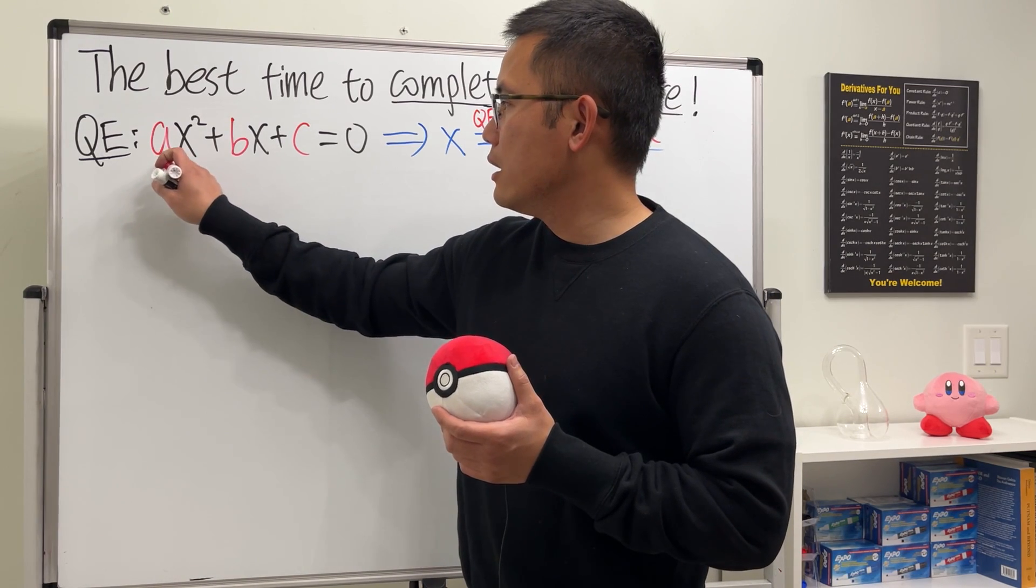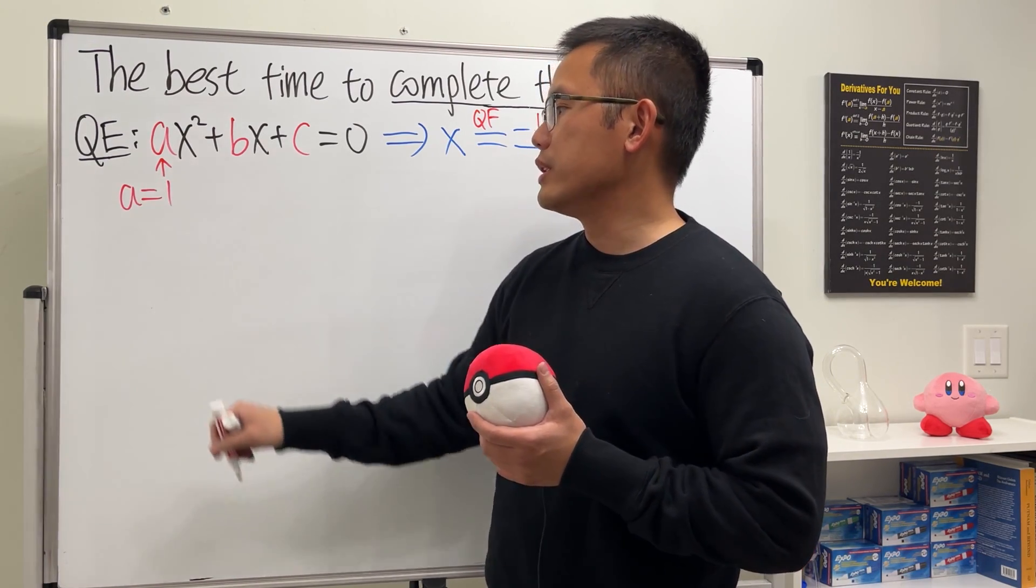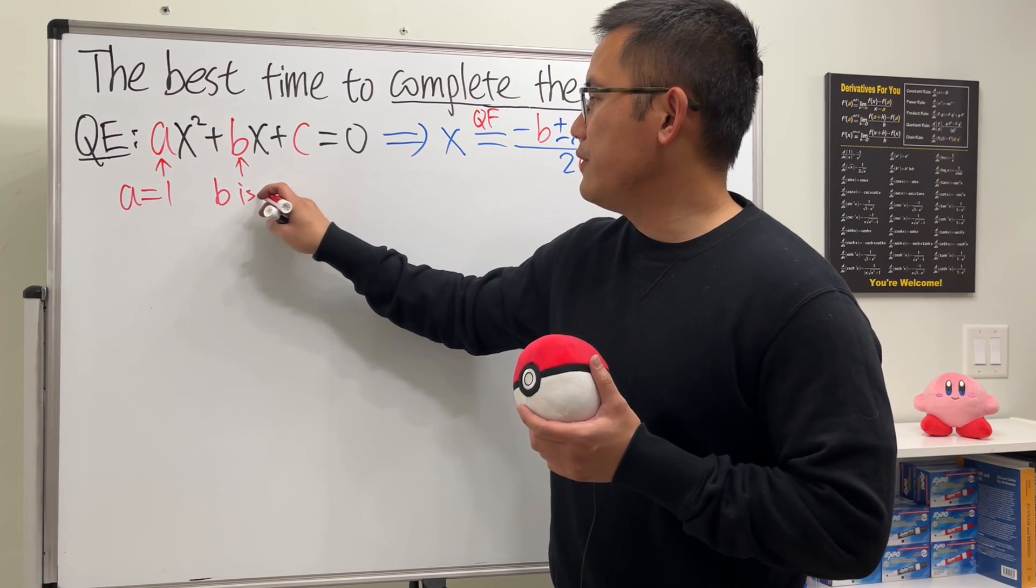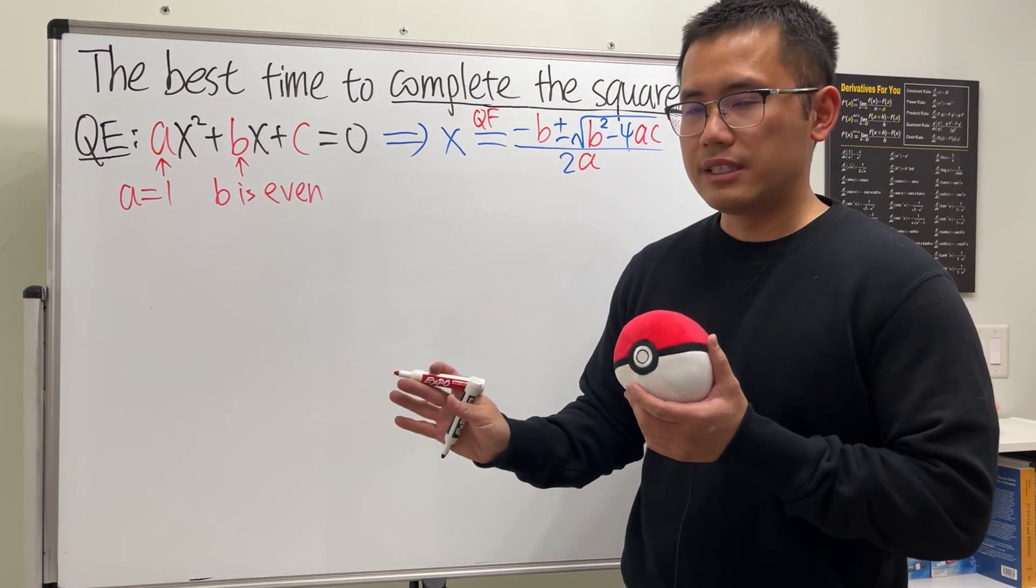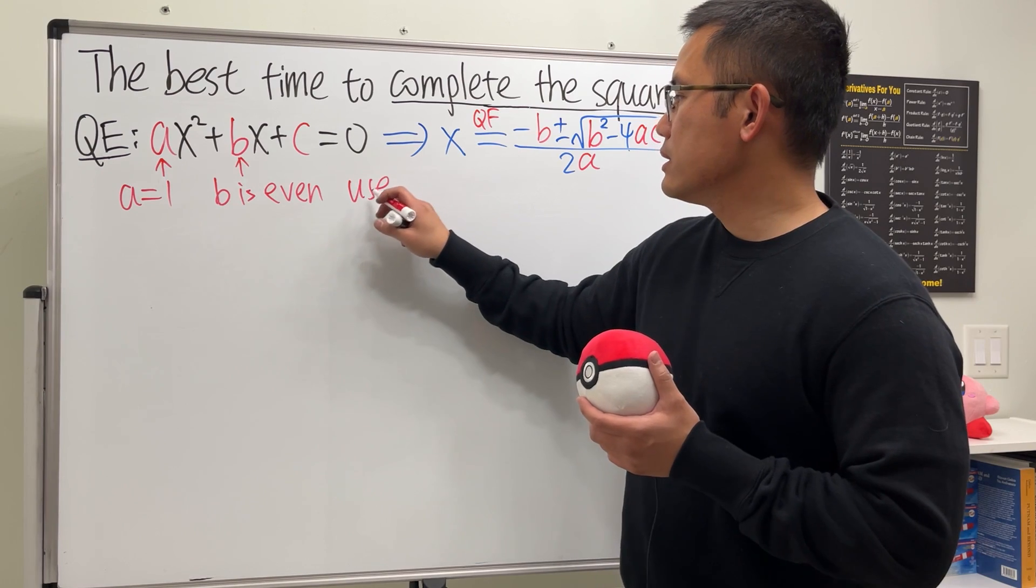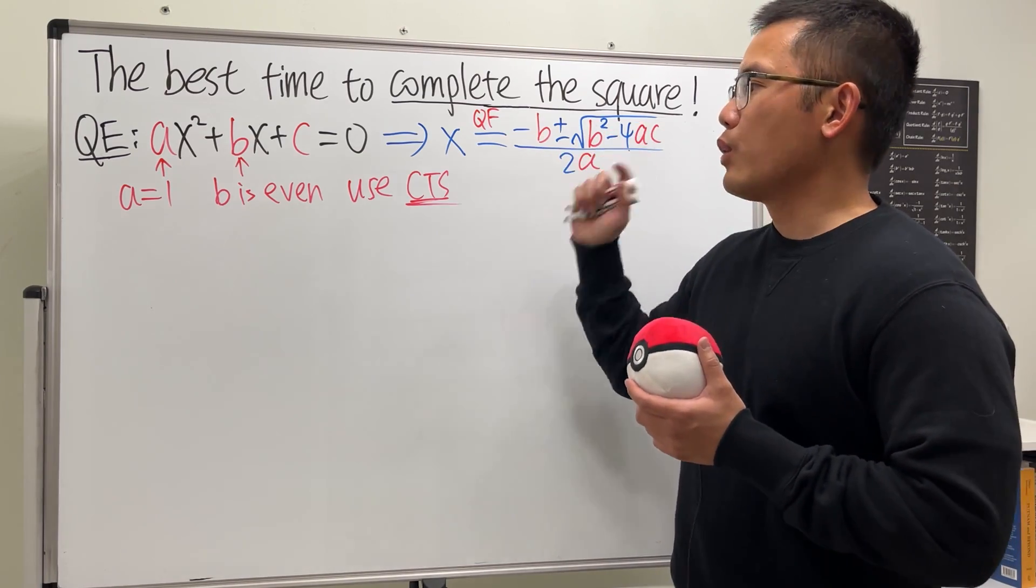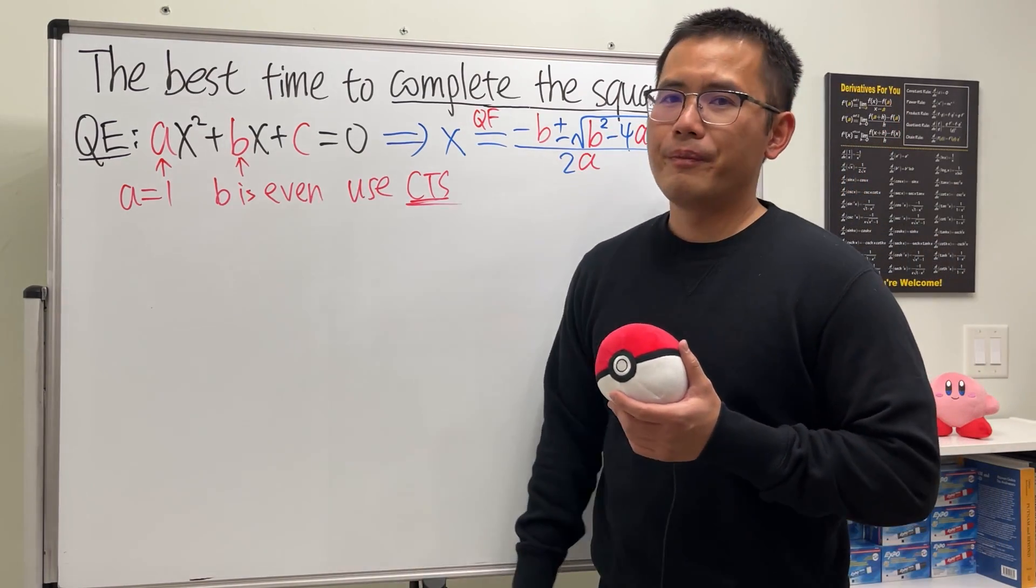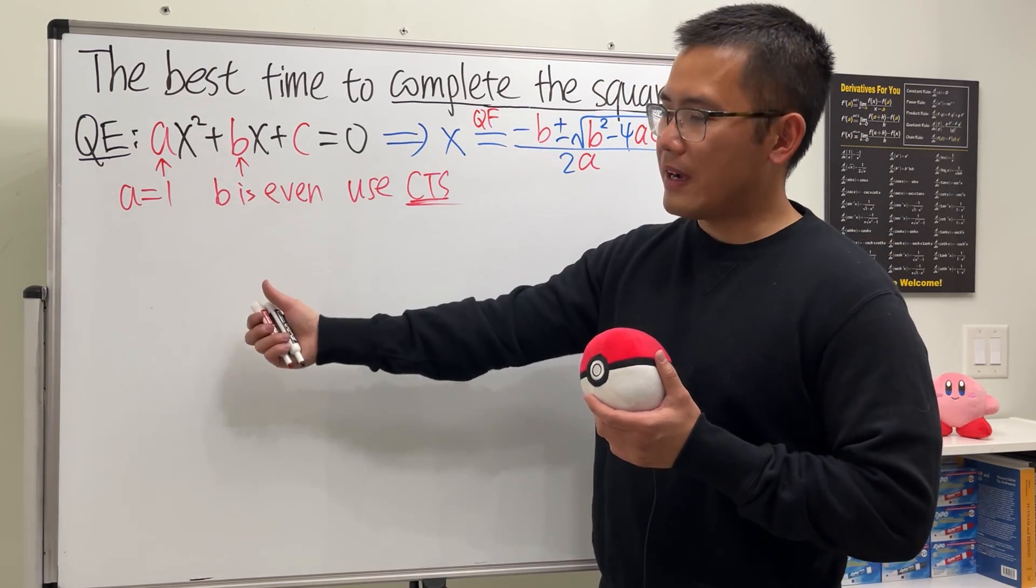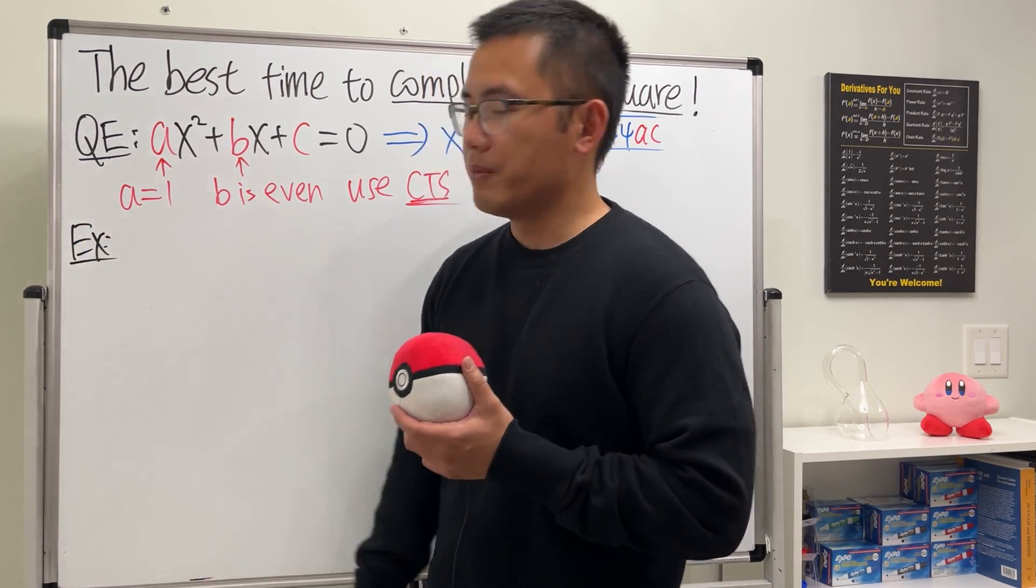Here's the first thing: if we have a = 1, sometimes if you can easily make a equal to 1 then go ahead, do it. Next, take a look at the b value. If b is even, and it can be positive or negative, doesn't matter. But if we have a = 1 and b is even, then I will tell you, use the completing the square, which is CTS. This I promise you will beat the quadratic formula. And what happens to C? Well, don't worry too much. It depends on the C value sometimes.